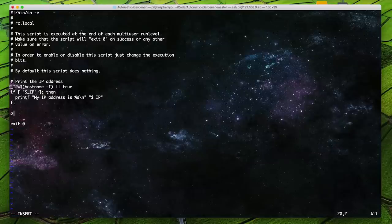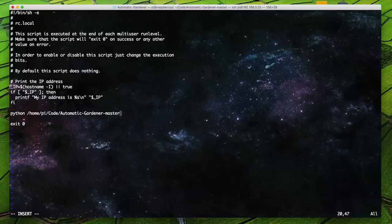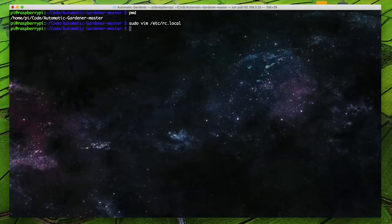Right before exit 0, I'll press i to edit, then type python, paste the current working directory, and then add gardener.py to the end of the current working directory. The last thing I'll need to do is restart my Pi and the program should be running.